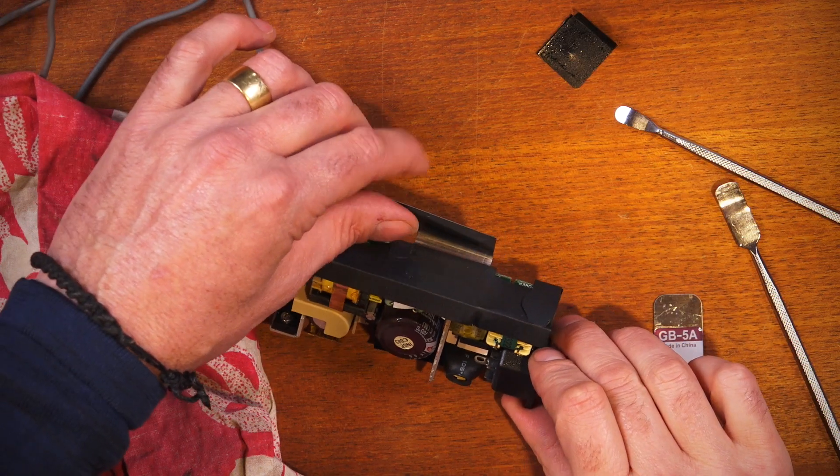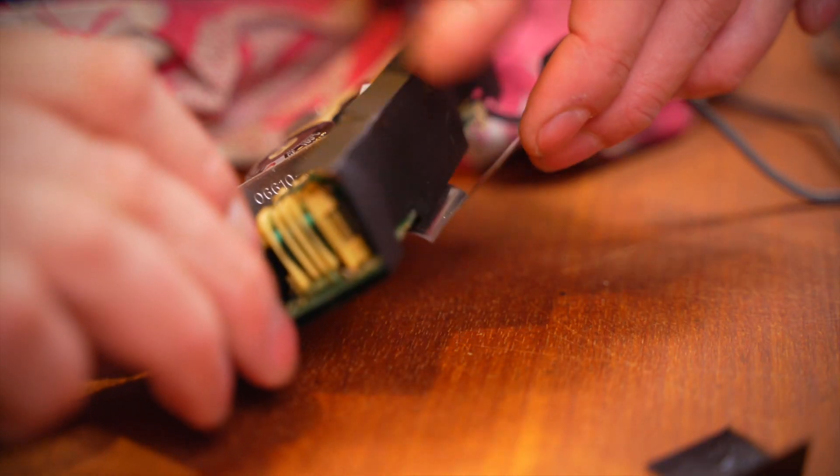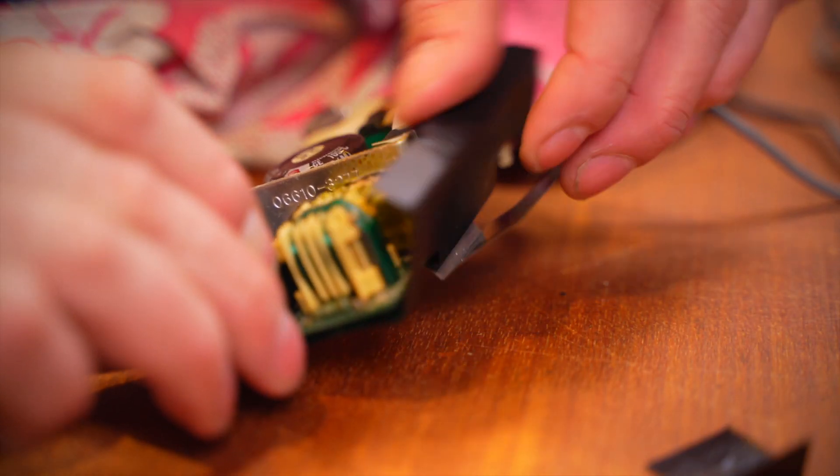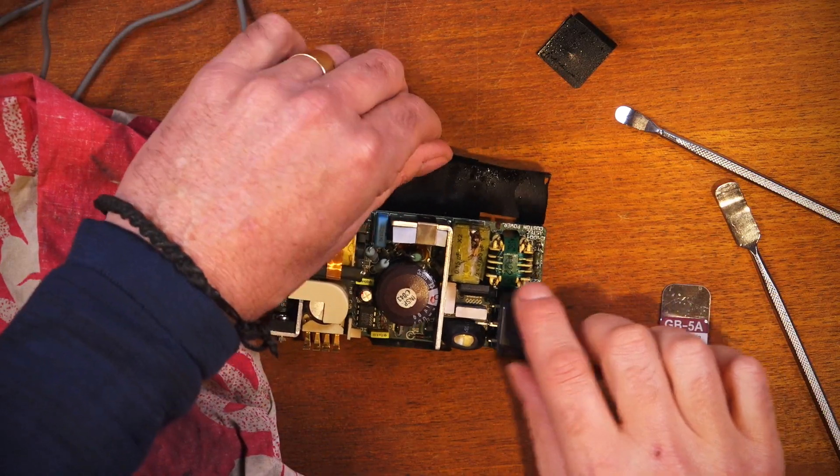Well I've just bent that shielding back down out of the way and we can get this plastic shielding sort of bent down out of the way. Let me clean all the weird crud off there and we can have a closer look at this thing.